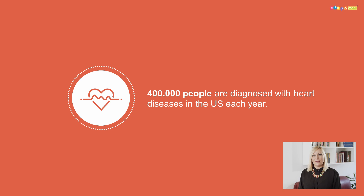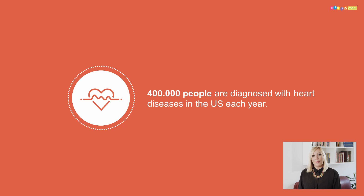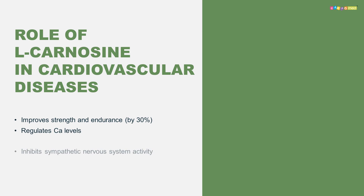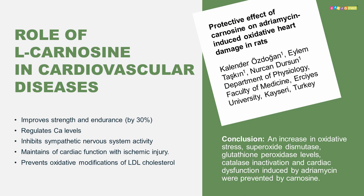What is the connection between L-carnosine and heart disorders? Healthy heart muscles naturally contain a certain amount of L-carnosine. Supplementation with L-carnosine improves the strength and endurance of the heart muscle by up to 30%. L-carnosine is also able to improve heart contractility mainly by regulating calcium levels, and it can inhibit the sympathetic nervous system that promotes hypertension, thus decreasing blood pressure.